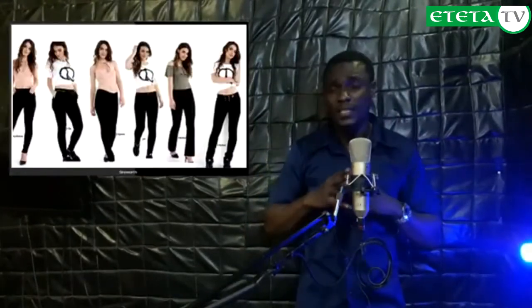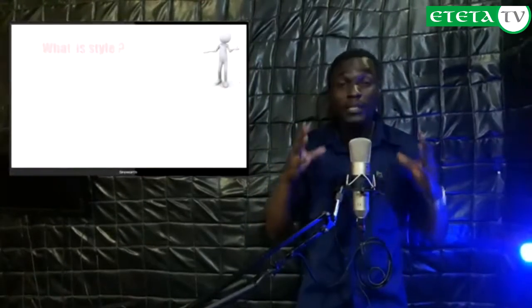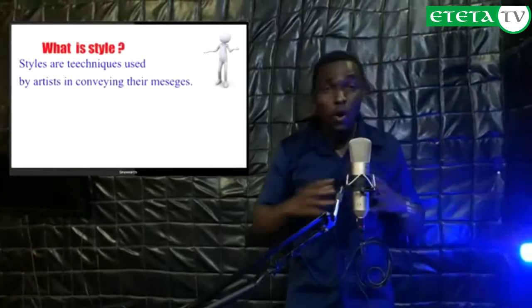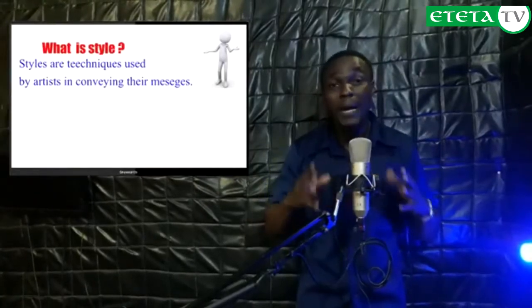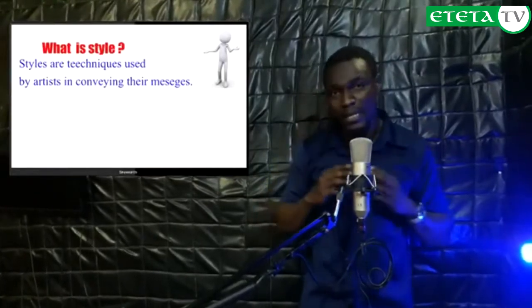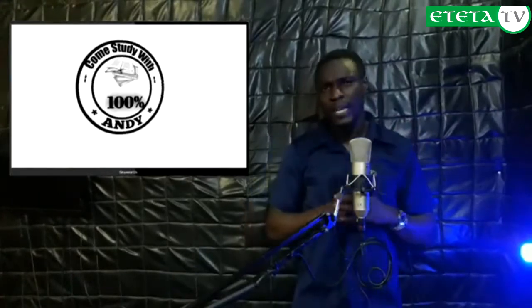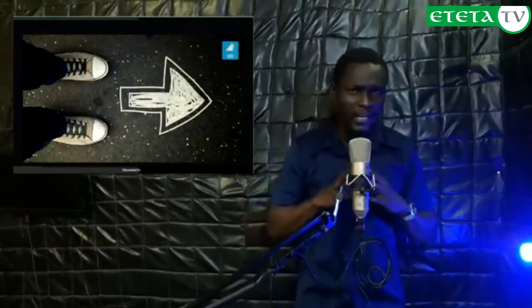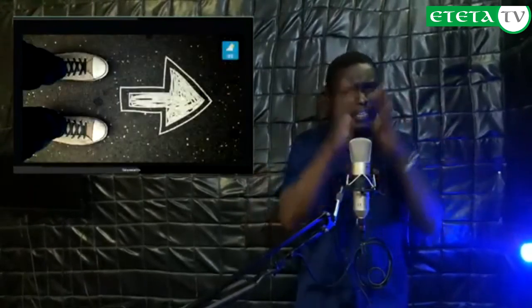Lastly, it's style. Style is a technique — all the methods that are used by artists in conveying their messages. There are many different ways in which writers can convey messages to their audiences. They may use flashback style, they may use forward narration. All these different kinds of techniques are what we call style in literature.